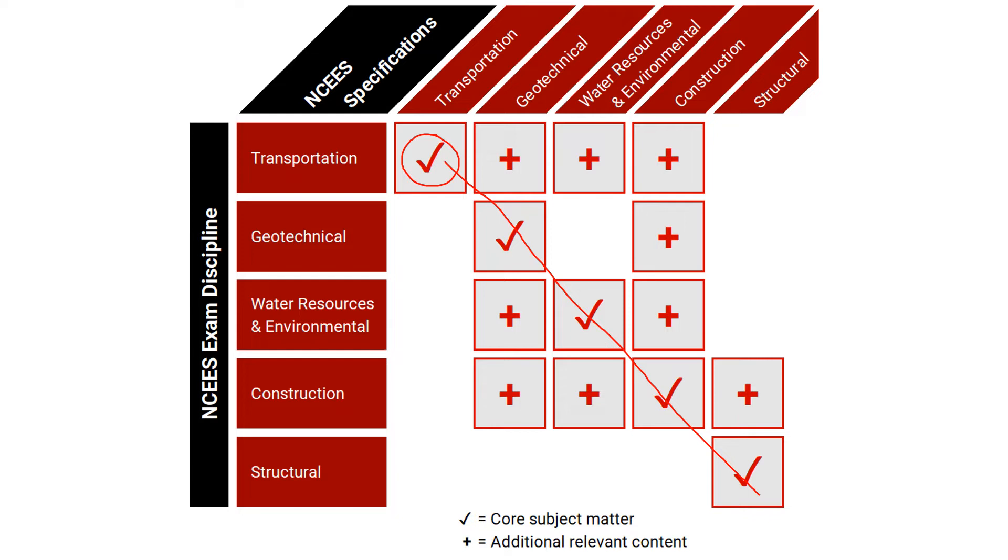What we're trying to show in this diagram is the additional relevant content in the other disciplines. You won't see questions on every single topic depending on which discipline you choose, but you will see some relevant content from the other specifications in most of those exam disciplines. What we're showing here is not necessarily one or two questions that may pop up, but really where there's a core set of questions coming from.